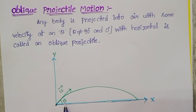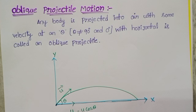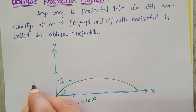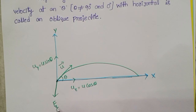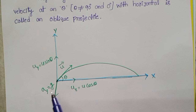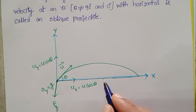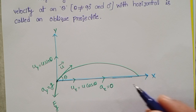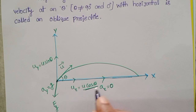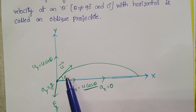The object makes an angle theta with the horizontal. The component of velocity along the x direction is ux = u cos theta, and the vertical component uy = u sin theta. A constant force — gravitational force — acts on the object. Acceleration due to gravity acts in the downward direction only. So acceleration along x direction is zero, meaning horizontal velocity u cos theta remains constant, while velocity along the vertical direction changes.